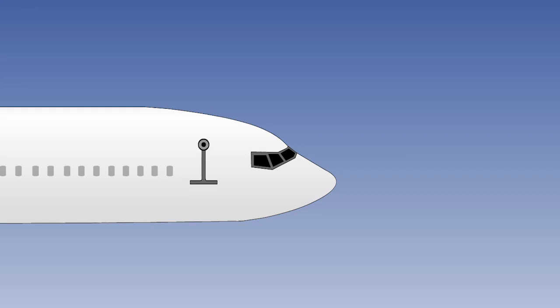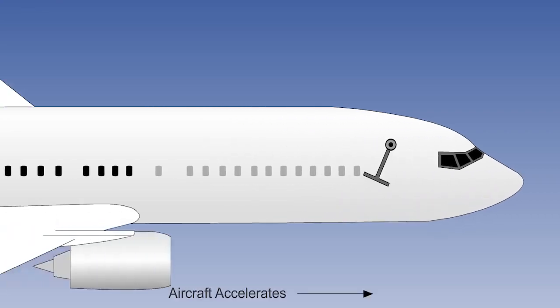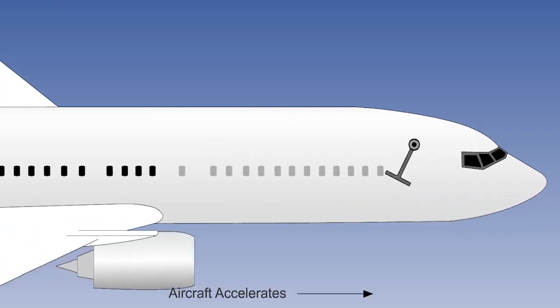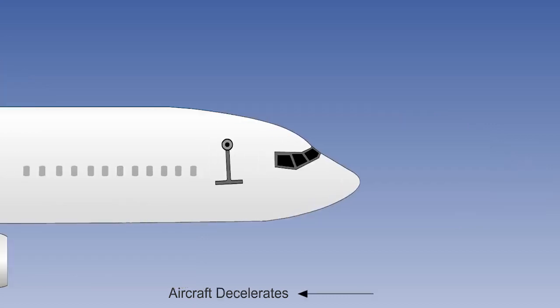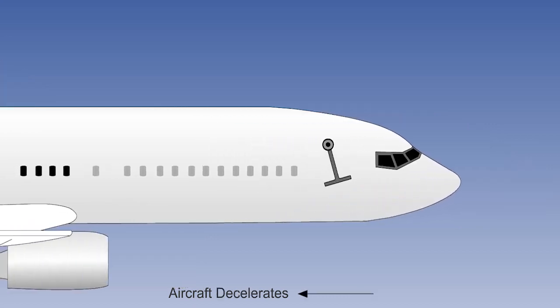Imagine a pendulum with the weight concentrated in the bottom, mounted in an aircraft. If the aircraft accelerates, the weight swings backwards. If the aircraft decelerates, the weight swings forwards.